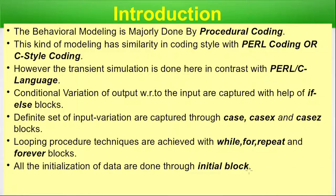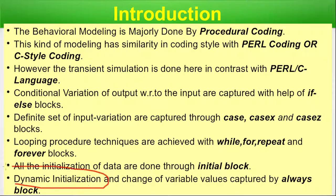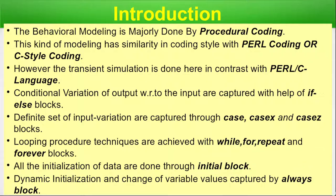All initialization of data is done through the initial block. The boundary condition — whatever values should be present before starting operation — is set by the initial block. Dynamic initialization and change of variable values are captured by the always block. While the initial block sets conditions at the beginning, the always block helps dynamically initialize or change already-initialized variables during transient simulation.